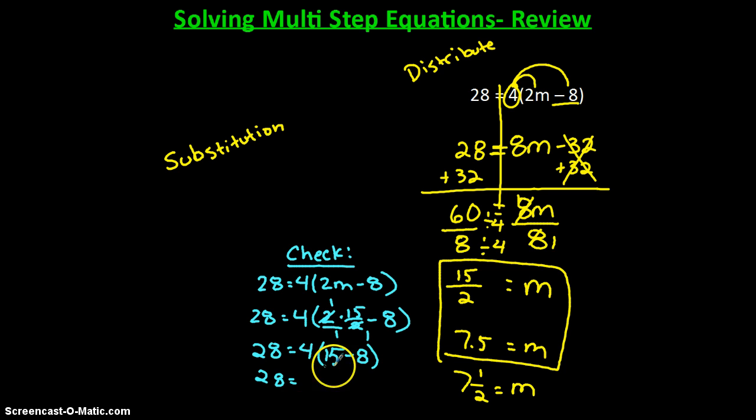We have 28, and that's equal to, order of operations, parentheses first, 4 times 15 minus 8 is 7, and 28 equals 4 times 7 is 28. So the 15 over 2, that checks out. If I'm doing it with 7.5, same steps, but this time, 28 equals 4 times 2 times 7.5, and then we subtract that 8 in the parentheses. We have 4 and then 2 times 7.5. If you have $7.50 and you get another $7.50, you have $15. So 2 times 7.5 is 15, and then subtract 8, and now we're back to the same situation we had before. I could solve that all the way out if I wanted to, or I could just leave it and trust that these are going to be the same thing. So both answers will check out.